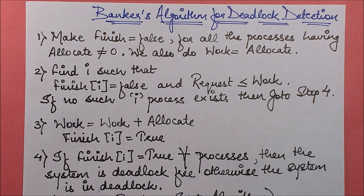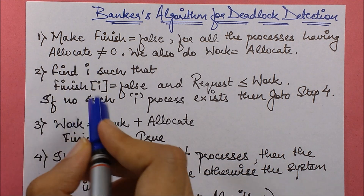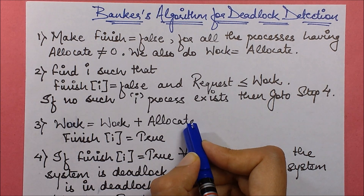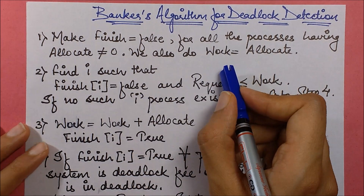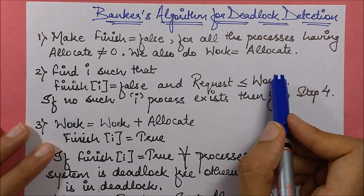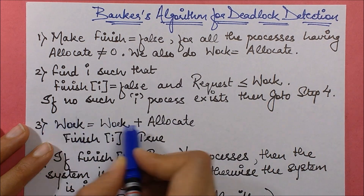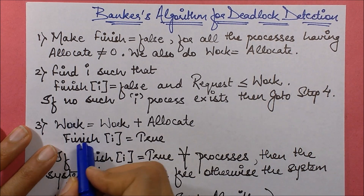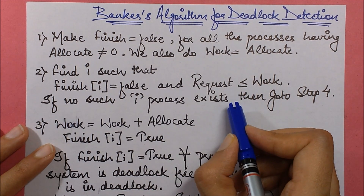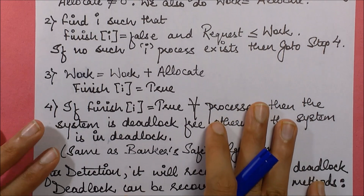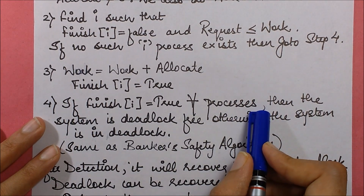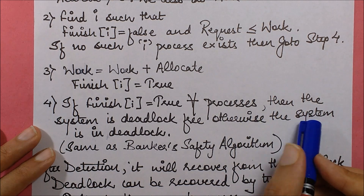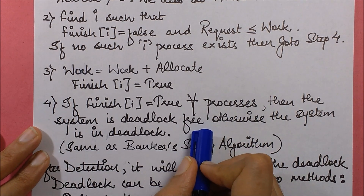If no such process is found, you exit or go to step four. Otherwise, if you find such a process, set work equals to work plus allocate — meaning we assume the process completes and releases its allocated resources, increasing what's available. Then set finish[i] equals to true, marking that process as processed. If finish[i] equals to true for all processes, the system is deadlock-free; otherwise the system is in deadlock.